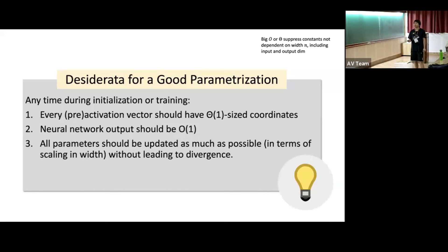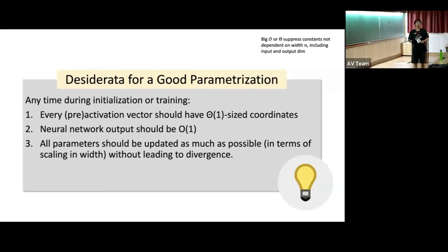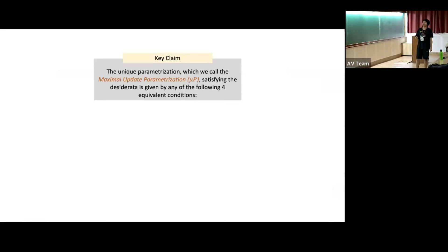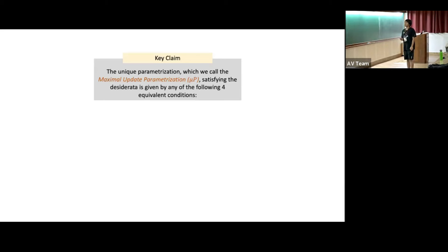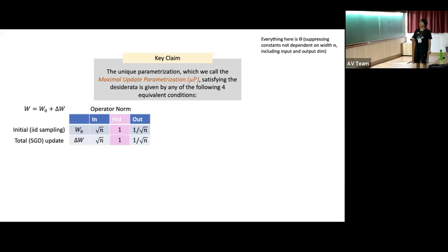These are the three desiderata or criteria that pin down what is a good parameterization. It turns out — and this is a claim I'll justify — there is a unique parameterization, which we call the maximal parameterization, satisfying these desiderata. It is given by any of four equivalent conditions. The most key one I'll focus on is the set of conditions on the operator norm, which is not the perspective we took last time.